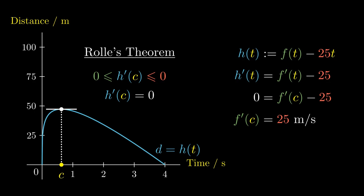But 25 meters per second, as we have seen, is precisely equal to 90 kilometers per hour. This means that there is a point in time c where the speed of the car, namely the derivative of f, equals 90 kilometers per hour.